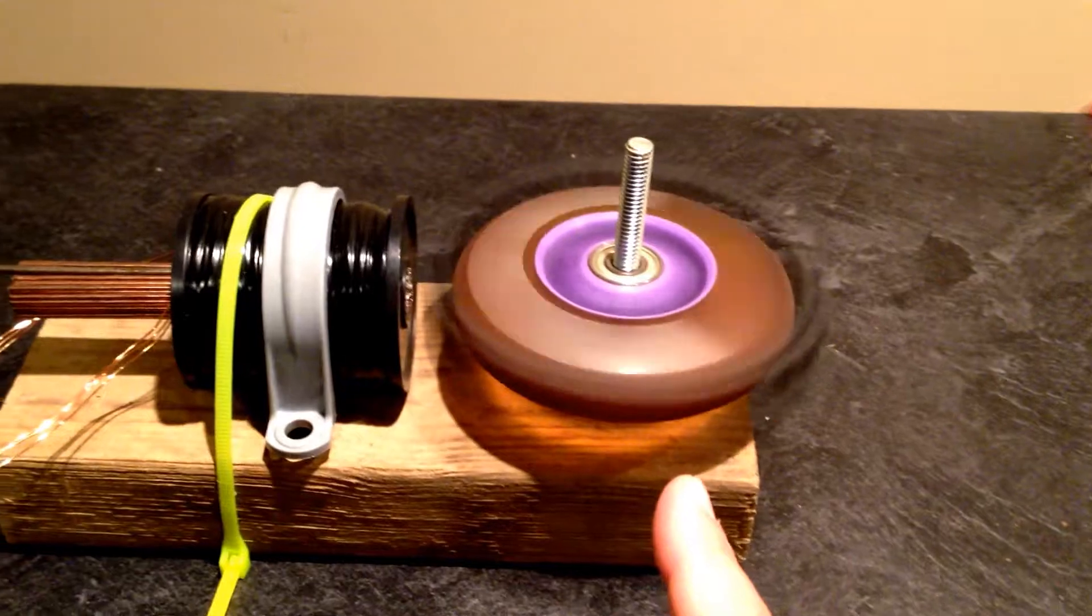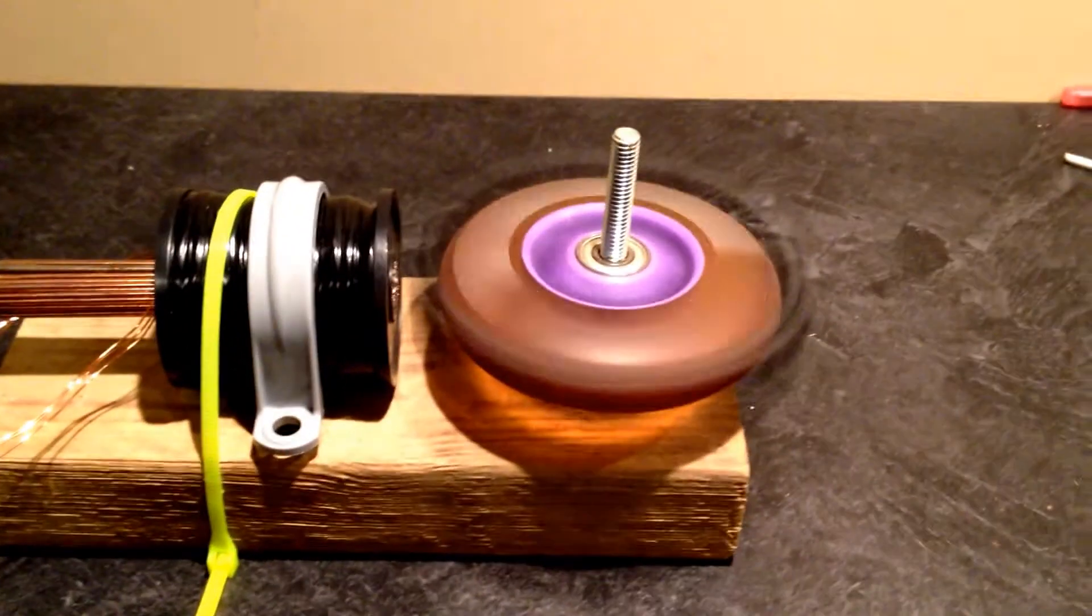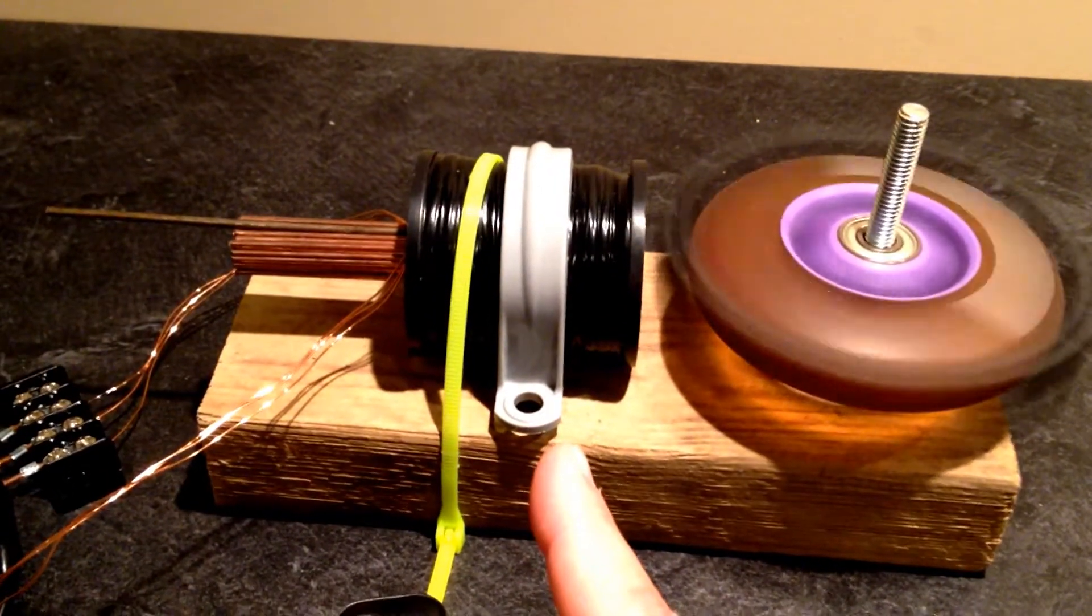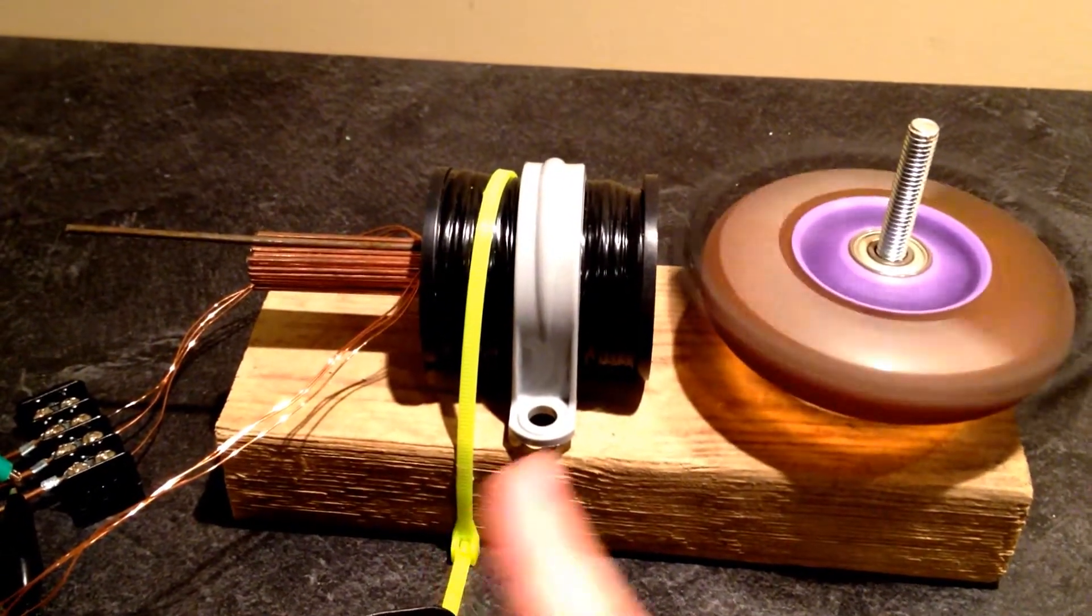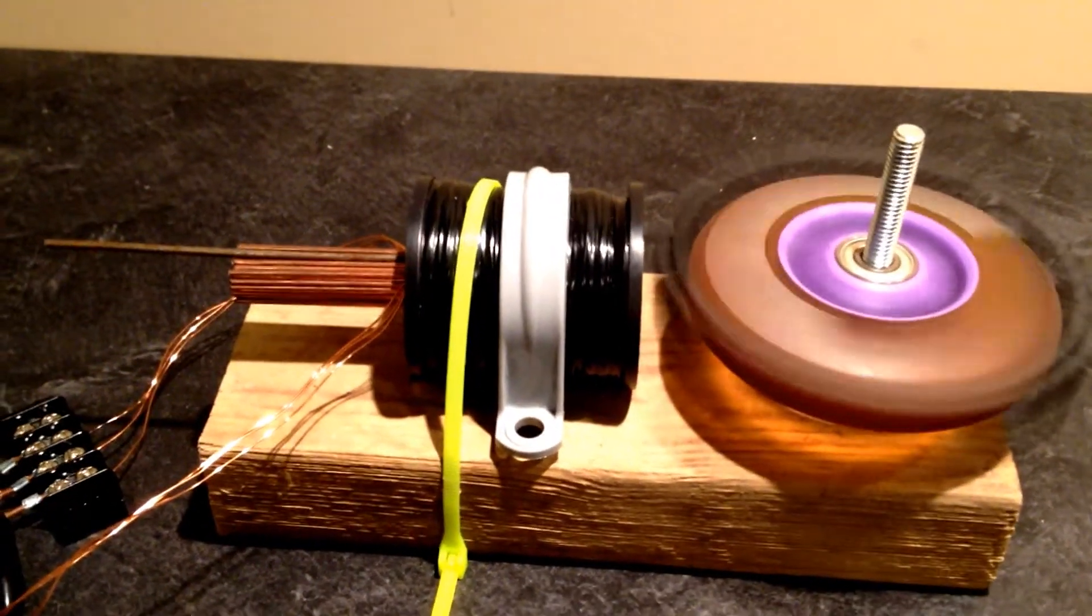Basically got the wheel. Five sets of magnets. Ceramic all north facing out. This is a coil. It's actually a tri-filer coil.